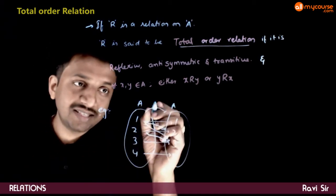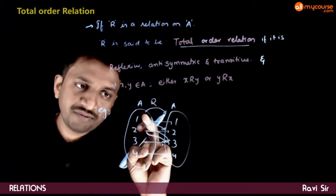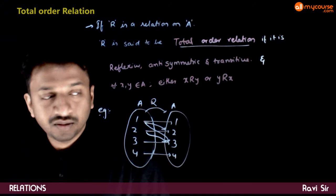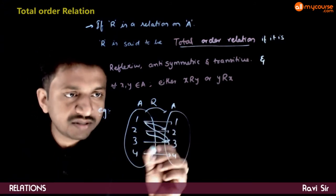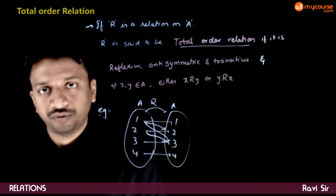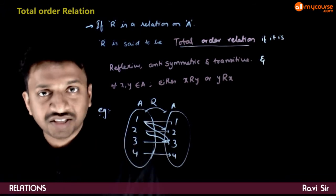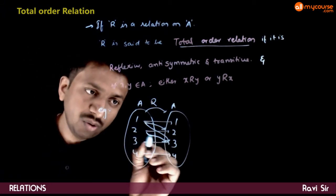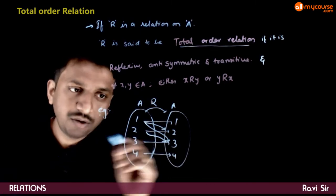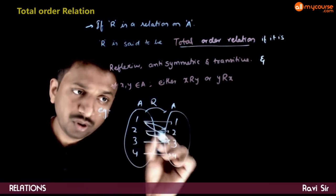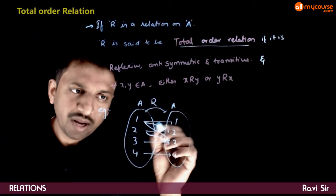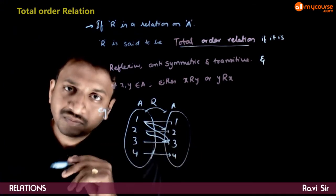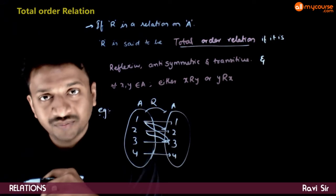Now let us take an example. Let R be a relation from the set {1, 2, 3, 4} to itself. You have all the reflexive elements (1,1), (2,2), (3,3), and (4,4), so this relation is reflexive. You also have elements (1,2), (2,3), and you do not have (2,1), (3,2), or (3,1). So this is anti-symmetric.